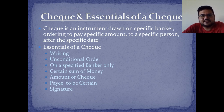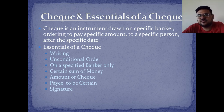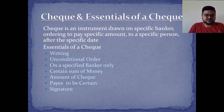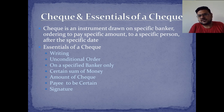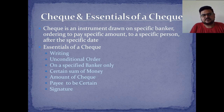A cheque must be in written format with an unconditional order, addressed to a specified banker, with a specific amount, a certain payee, and the drawer's signature. You can also cross a cheque by drawing two parallel lines on the top left corner and writing 'Account Payee' — even without writing it, the two lines indicate the amount should be directly deposited to the holder's account.